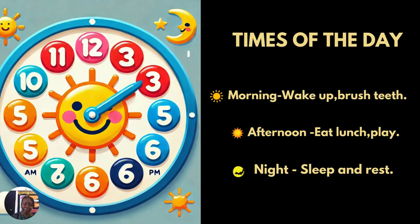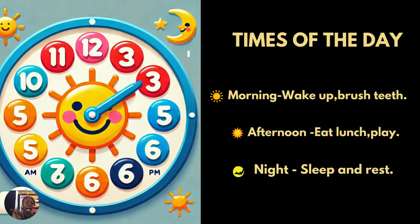Times of the day. We have morning — you wake up in the morning, you brush your teeth in the morning, you go to school in the morning. Afternoon — you eat your lunch in the afternoon, you play in the afternoon. Night — you sleep and rest at night. So those are the three times of the day: morning, afternoon, and night.